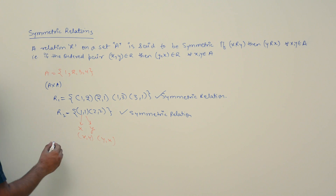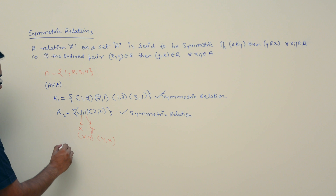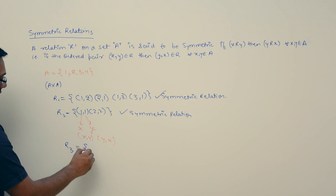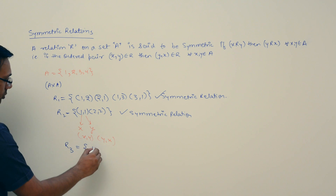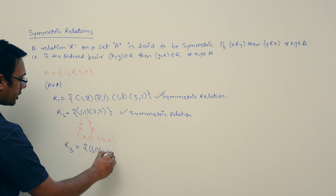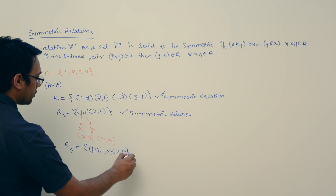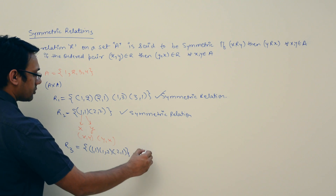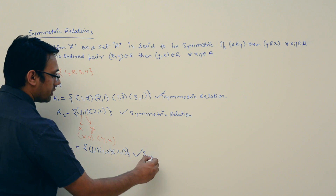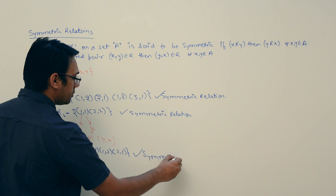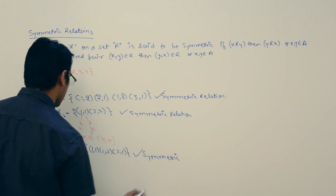Now assume the relation R3 which is equal to {(1,1), (1,2), (2,1)}. This relation is also symmetric.